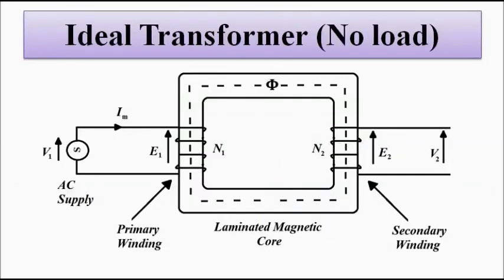The number of turns across the primary and secondary winding play a very huge role in deciding whether the output voltage will be more or less compared to the input supply voltage. We have discussed some basic principles related to how EMFs are induced as per Faraday's law and how mutual flux plays a role in the induction of the primary and secondary EMFs, E1 and E2 respectively.